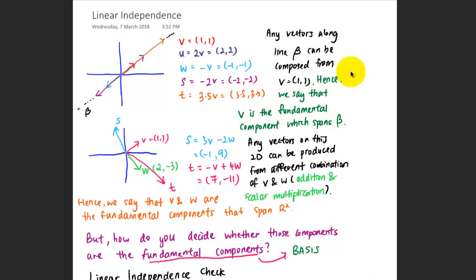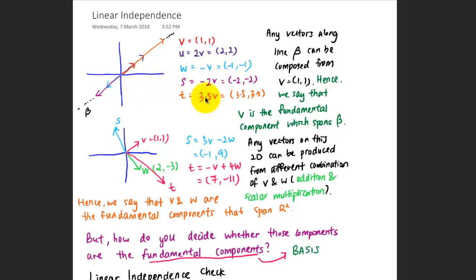In the previous lesson, we said that the fundamental component must be independent. Let's consider this case to further understand linear independence. Any vectors along the line beta form a vector space and can be composed from the fundamental component v with vector (1,1). You can get u, which is twice the length of v by multiplying with 2, the opposite by multiplying with -1, or any other scalars. So we say that v is the fundamental component which spans the beta vector space.